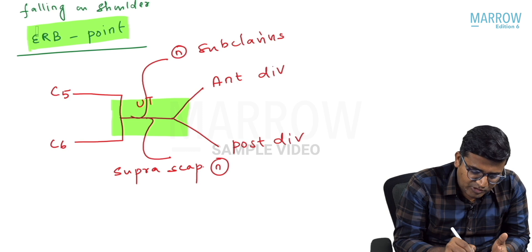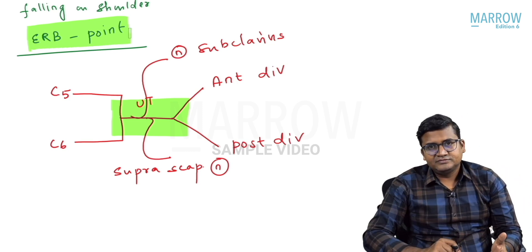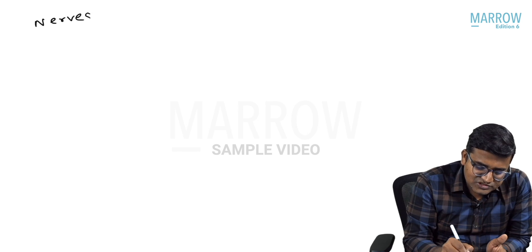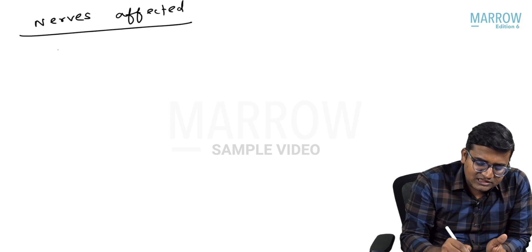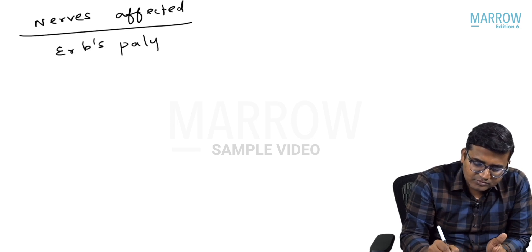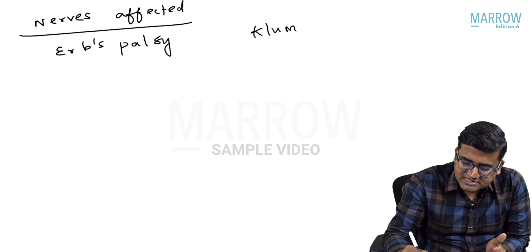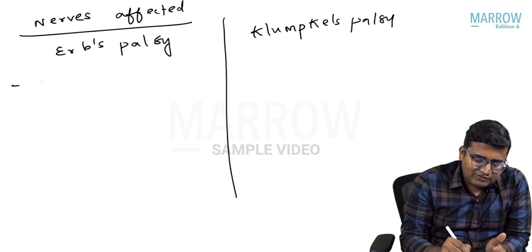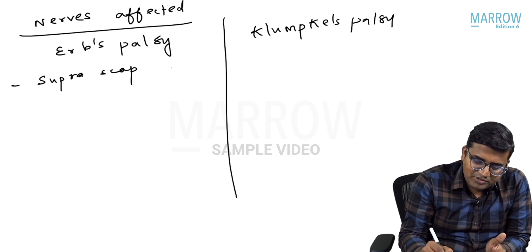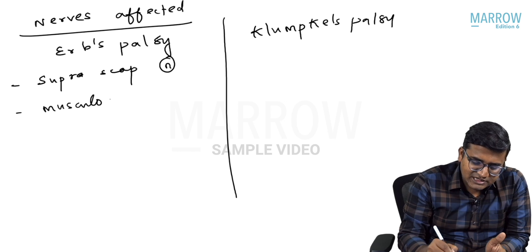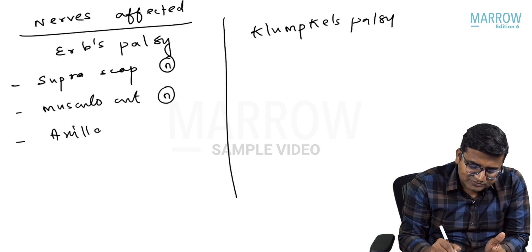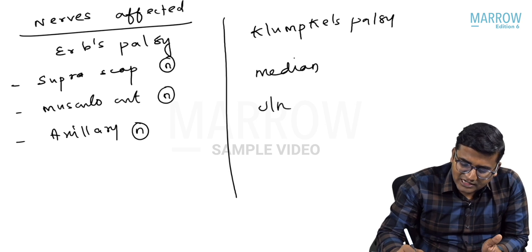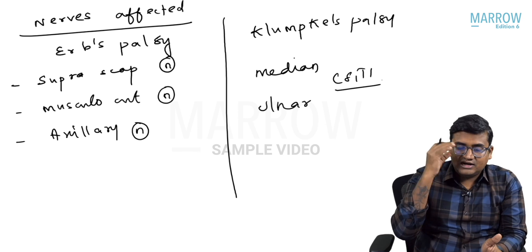The main nerves affected in Erb's palsy are the suprascapular nerve, musculocutaneous nerve, and axillary nerve. In Klumpke's palsy, the median nerve and ulnar nerve are affected — specifically the C8 and T1 fibers of the median and ulnar nerves.